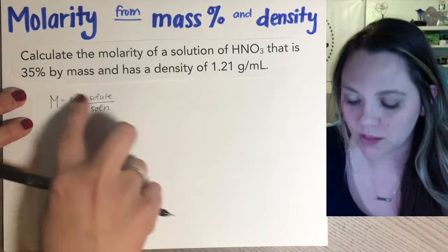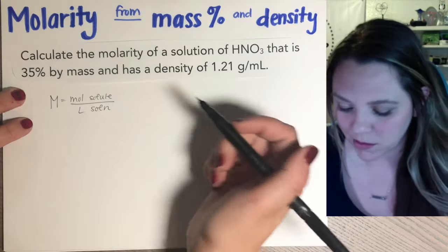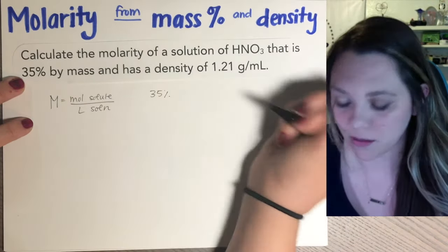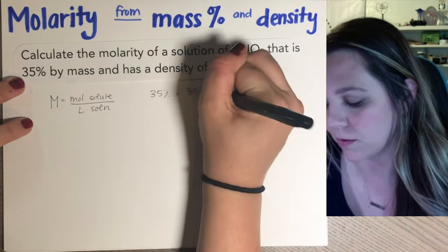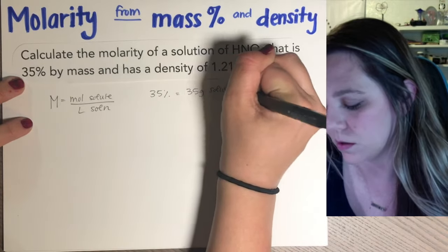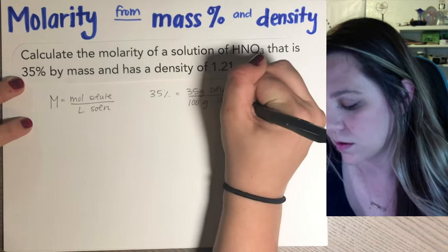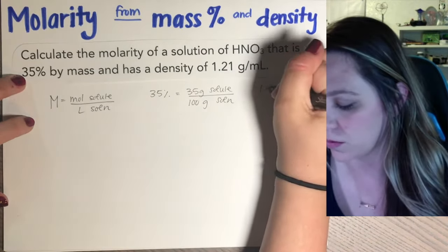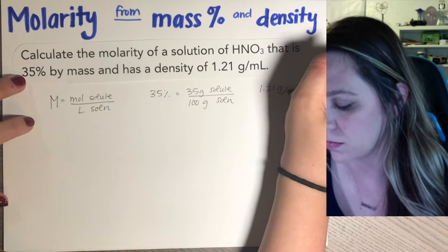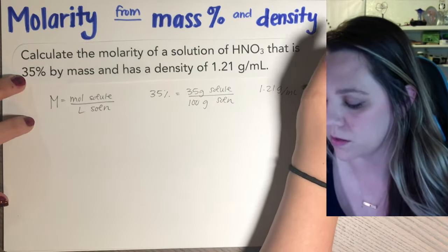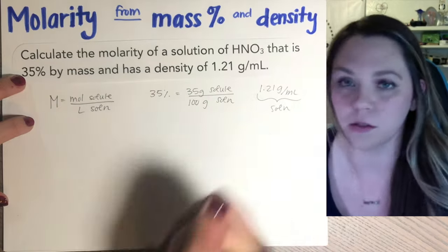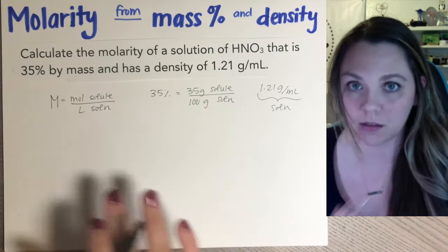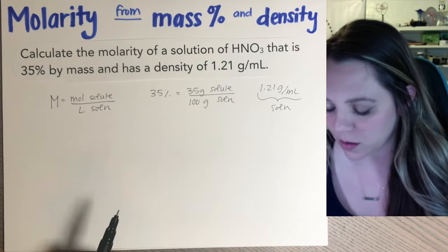So I know that this is what I'm trying to get to and I have some information. So I have the 35% by mass. What that really means is I have 35 grams of my solute for every 100 grams of solution. And it tells me density, so I know I have 1.21 grams per mil of solution.